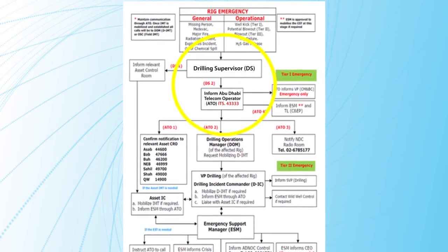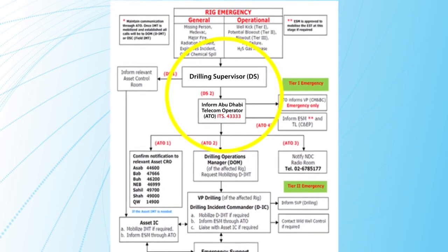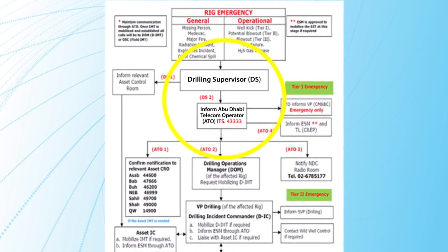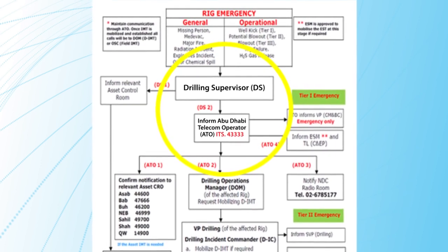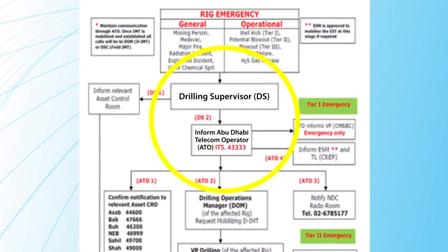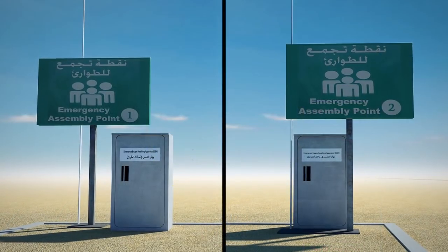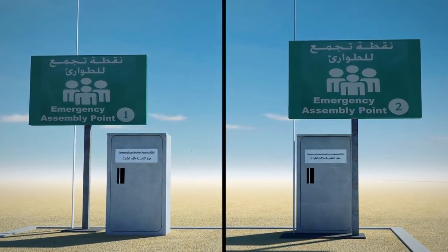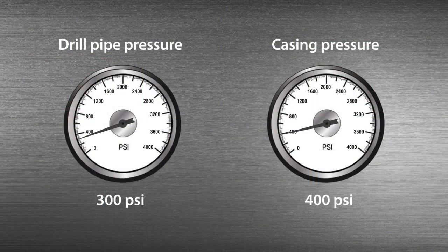Meanwhile, at the rig site, the on-scene commander — the ADCO drilling supervisor — will notify the Abu Dhabi telecom operator and relevant assets control room, and raise emergency tier 1, which activates appropriate emergency response teams. Unnecessary crew will be evacuated to the nearest assembly point. The next step will be to monitor the shut-in drill pipe and the shut-in casing pressure gauges.